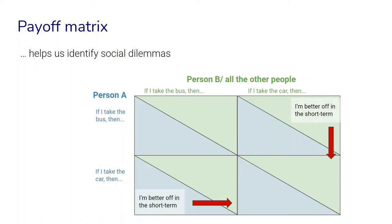Social dilemmas are situations where people individually are motivated to behave in a certain way because they seem to be better off in the short term, but only if other people don't do the same thing. The problem is if everybody decides to behave in that way because it's better for them in the short term, it might create outcomes that are actually worse for everybody in the long term — compared to a situation where behaving differently would allow all of them to be better off in the long term. This is the essence of the social dilemma that we can identify with the help of a payoff matrix.